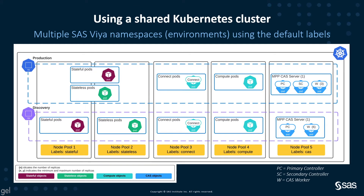Here is our sample environment. We're looking at multiple SAS Viya environments. In the previous examples, we had a Kubernetes cluster that was running one namespace. In this example, we can see that we've got two SAS Viya environments. When you deploy the SAS Viya software, it is to a Kubernetes namespace, and you can only have one SAS Viya deployment per namespace. So we have our production environment shown by the blue dashed box, and in purple we have our discovery environment.